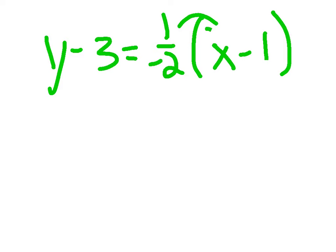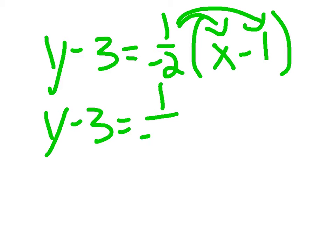Then you're going to distribute, and you come out with y minus 3 equals negative 1 over 2x. It ends up being plus 1 over 2, because negative 1 times a negative number equals a positive.